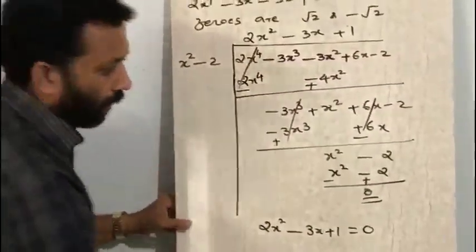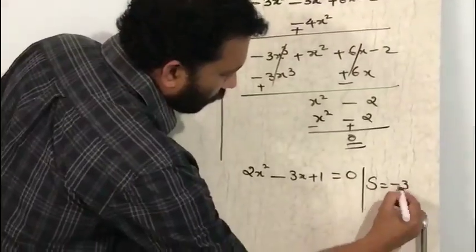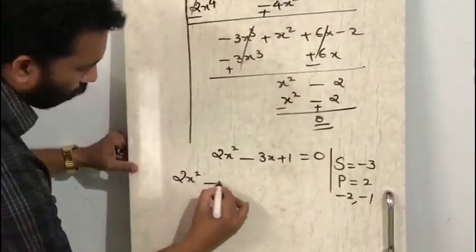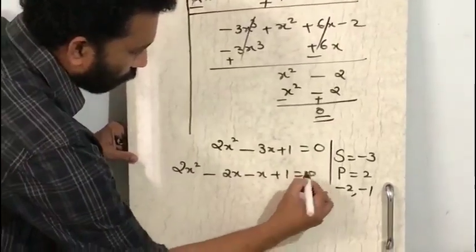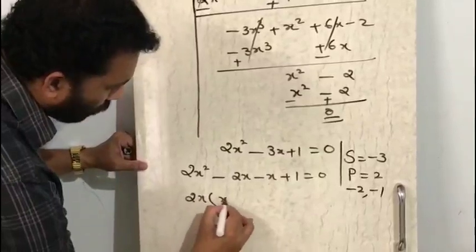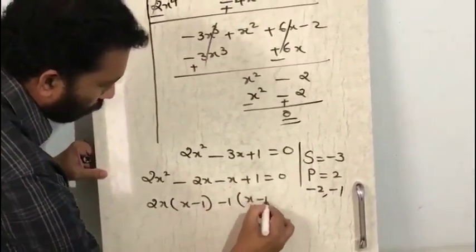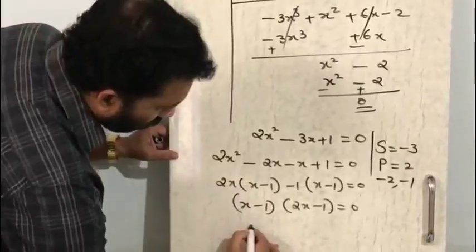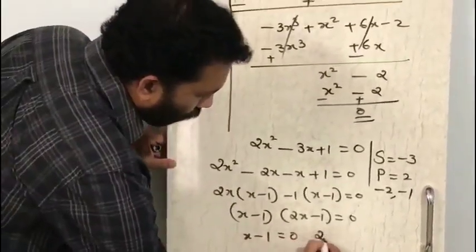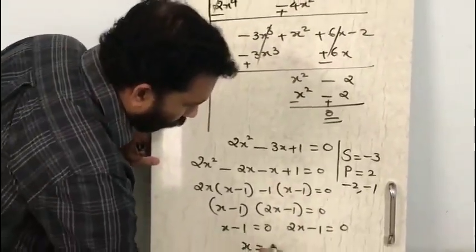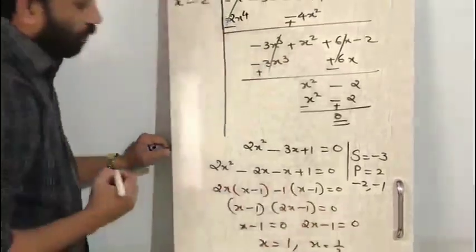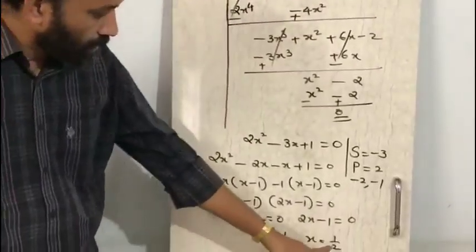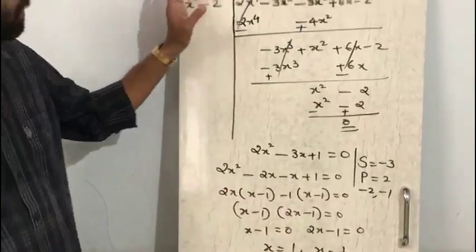Splitting the middle term: sum is −3, product is 2, so the numbers are −2 and −1. We get 2x² − 2x − x + 1 = 0, which factors as 2x(x − 1) − 1(x − 1) = 0, giving (x − 1)(2x − 1) = 0. Therefore x = 1 or x = 1/2. So the four zeros of this polynomial are √2, −√2, 1, and 1/2.